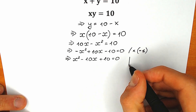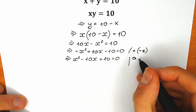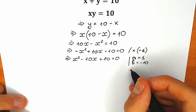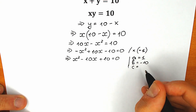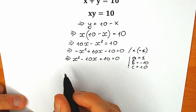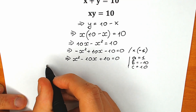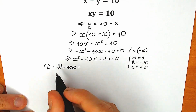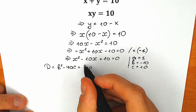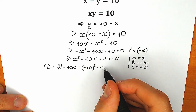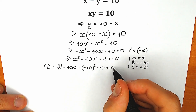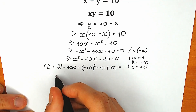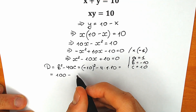From here we need to identify the coefficients. So a equals 1, b equals minus 10, and c equals 10. Now let's plug each of these into the discriminant formula: discriminant equals b squared minus 4ac. So we have minus 10 squared minus 4 times 1 times 10. As a result, our discriminant equals 100 minus 40, which equals 60.